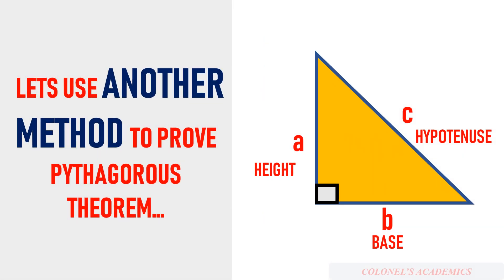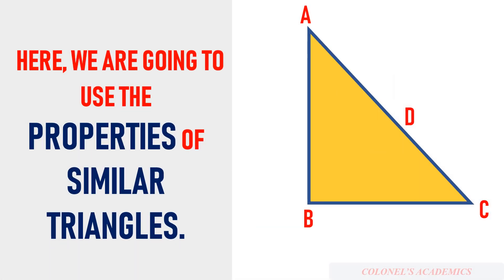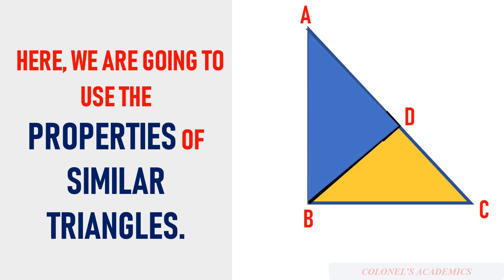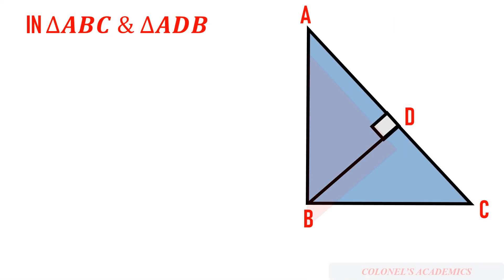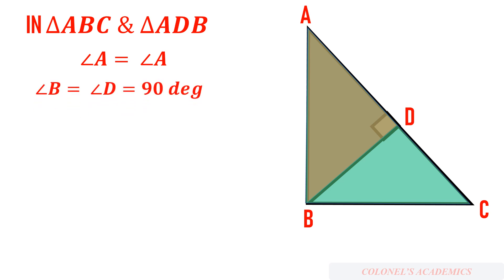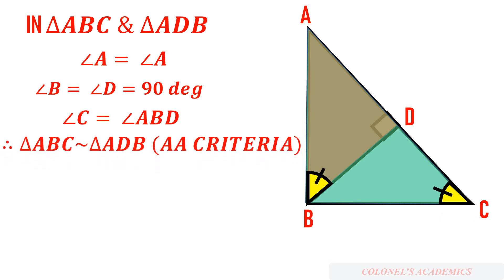Now let us see another way to prove the Pythagorean theorem using properties of similar triangles. We draw a perpendicular from point B to side AC. The figure has two smaller triangles and one big right triangle. We need to prove the smaller triangles are similar to the bigger triangle. In triangles ABC and ADB: angle A equals angle A, and angle B equals angle D equals 90 degrees by construction. Since two angles are equal, the third angle is automatically equal — angle C equals angle ABD — so these two triangles are similar by the AA criterion.